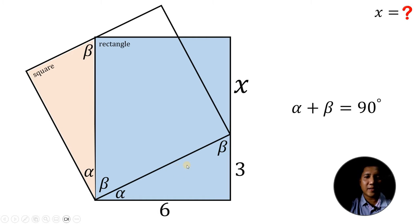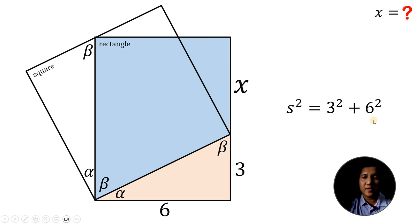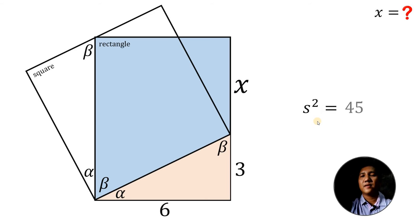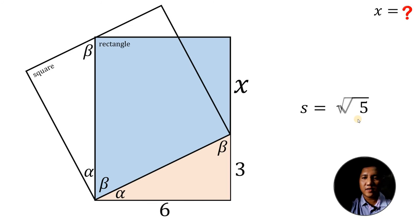We will use these two right triangles to solve for x. First, let's focus on the bottom right triangle and solve for the hypotenuse — the side length of this square — using the Pythagorean theorem. So we have s² = 3² + 6², which gives us s² = 9 + 36 = 45. Taking the square root of both sides: s = √45 = √(9×5) = 3√5.